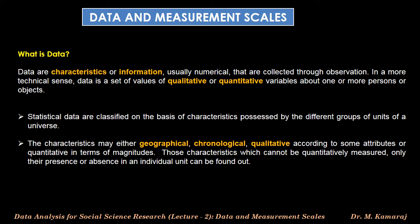Those characteristics which cannot be quantitatively measured — only their presence or absence in an individual unit can be found out. For example, educational qualification, employment, occupation, etc. We cannot quantitatively express them; what we can do is determine whether an individual's qualification is high school level, higher secondary level, graduation, or post-graduation. Similarly, individual's occupation may be unemployed, self-employed, private job, or government job.